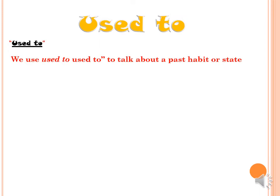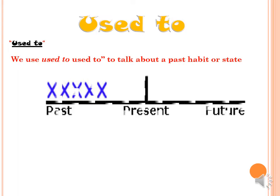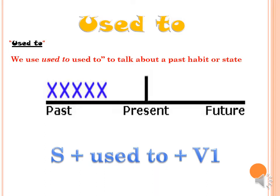We use 'Used to' to talk about past habits or states. Look at the timeline — we have past, present, and future. To talk about past habits, meaning an action that happened in the past but now you stop doing it, use 'Used to'. The structure of the sentence will be: Subject followed by 'Used to' plus Verb 1. Verb 1 meaning the base form of the verb — infinitive.